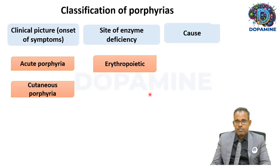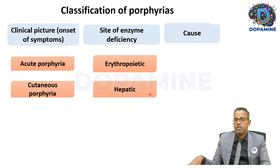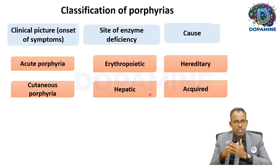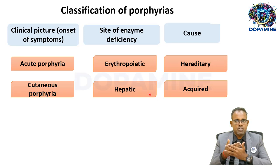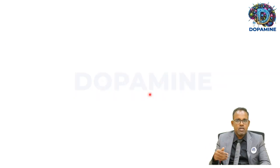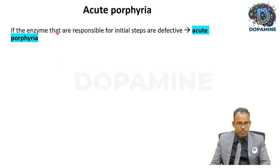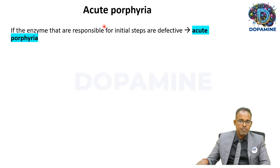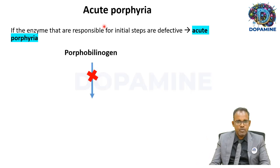Acute porphyria develops whenever the enzymes responsible for the initial steps of heme synthesis are defective. For example, if the enzymes involved in the initial steps — such as ALA dehydratase and the subsequent enzymes — are defective, that leads to acute porphyria.